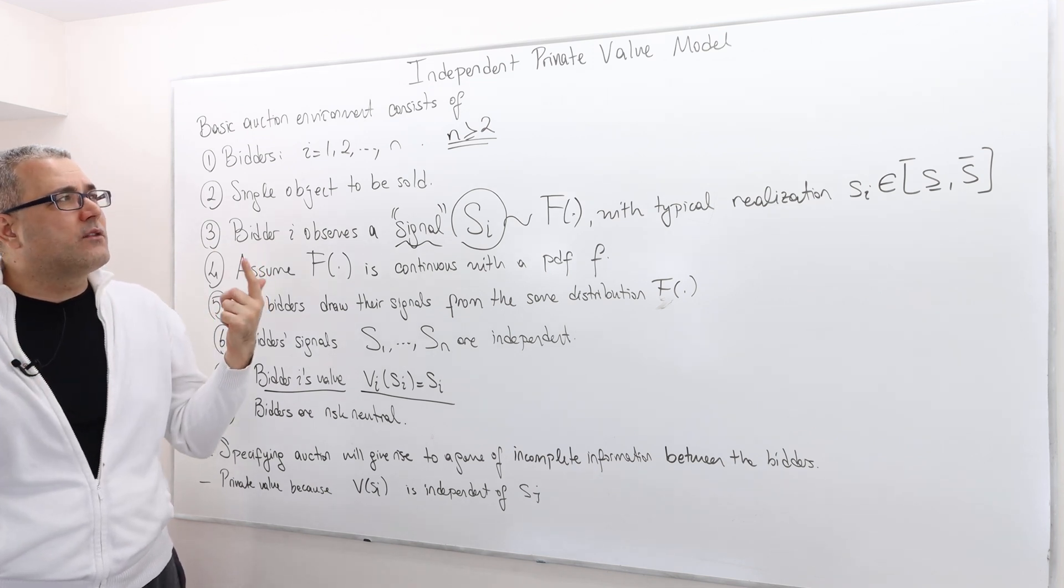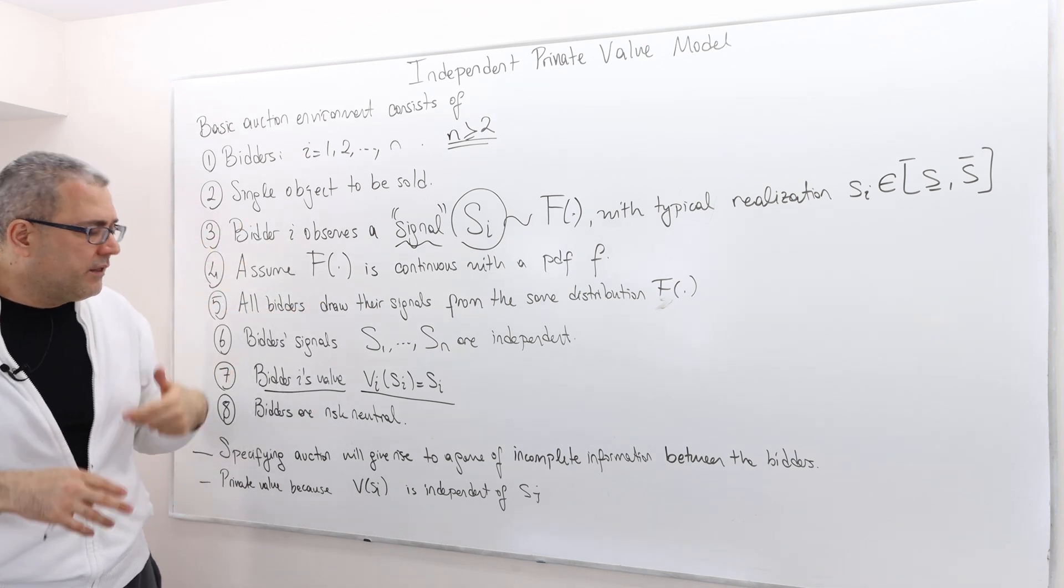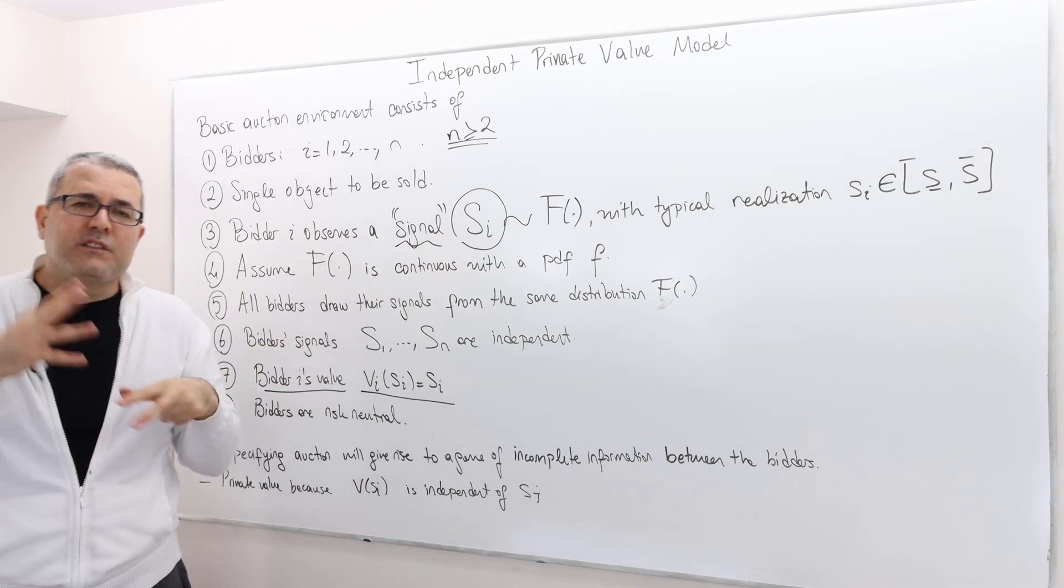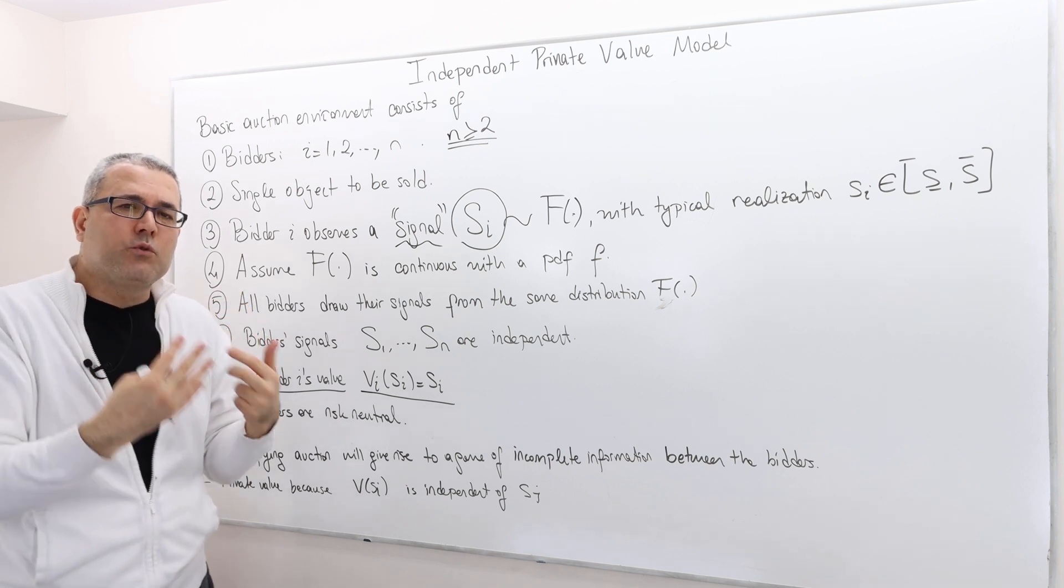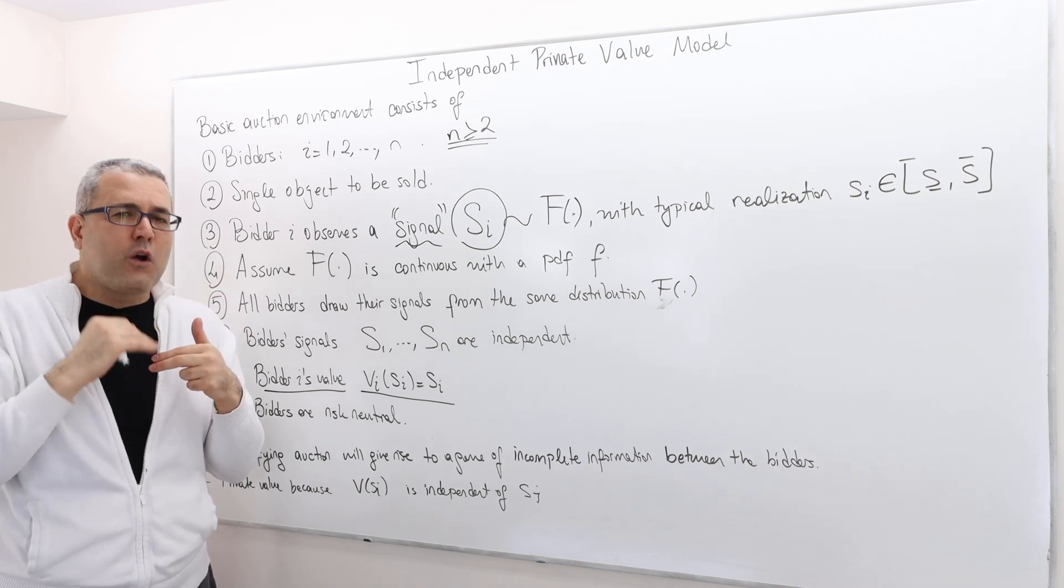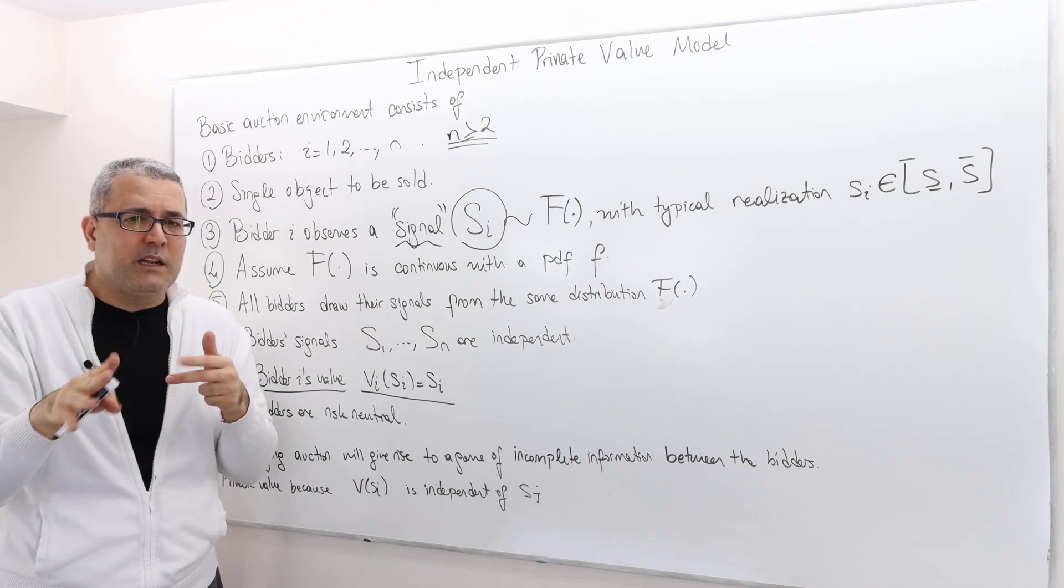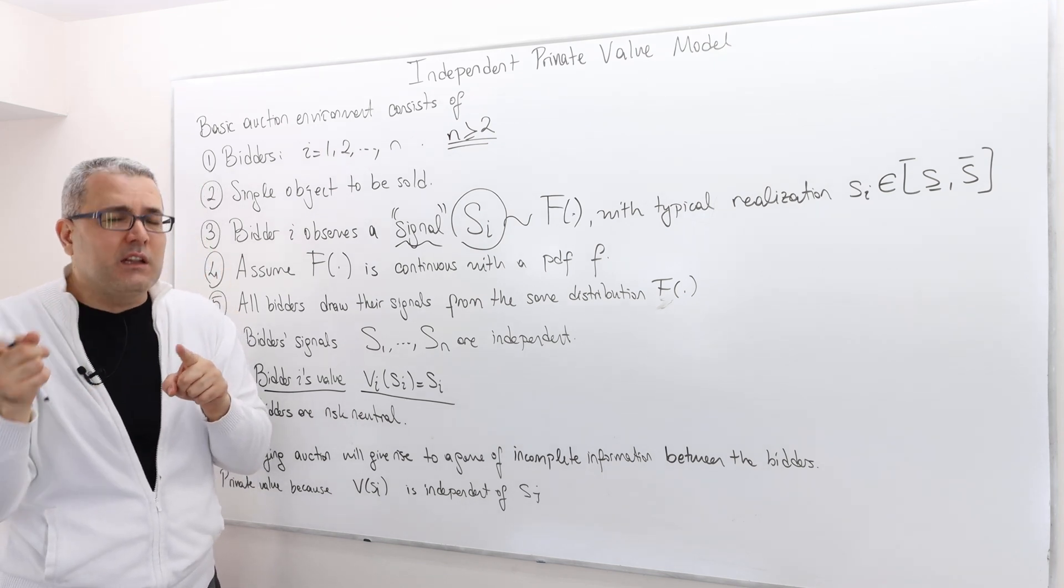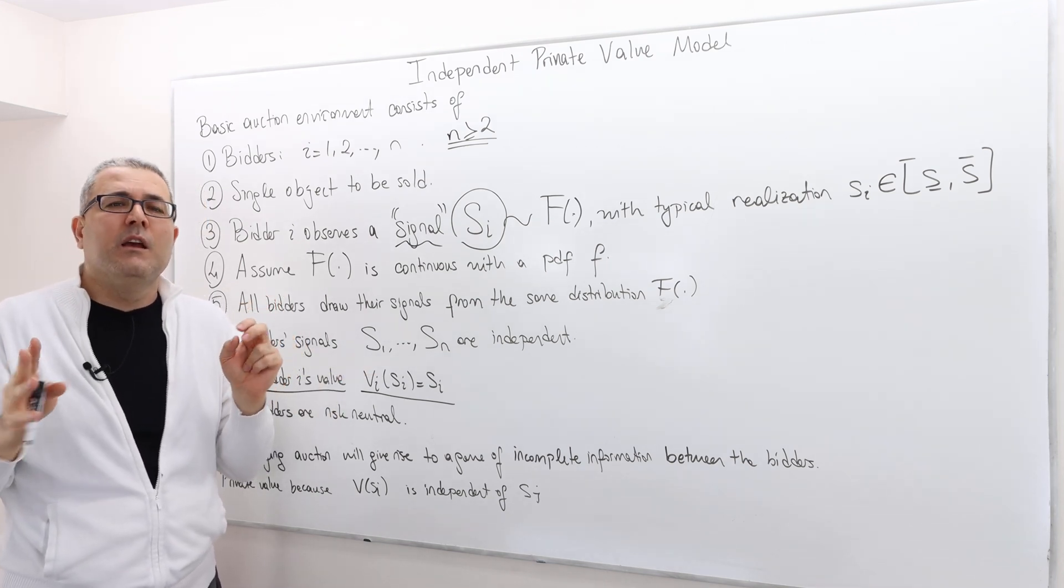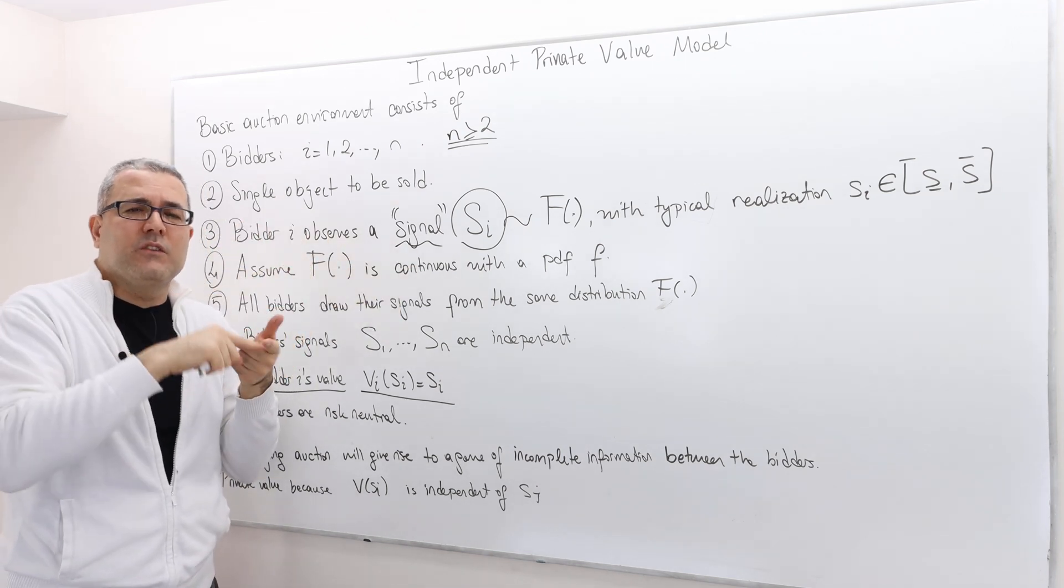You may wonder, what about non-private value model? We have, for example, correlated value model. There, the signals can be correlated, and so the valuations can be correlated. So I know this object is worth a million dollars to me, but you know what? You're not so different from me. And so probably your valuation is going to be around 1 million. I don't know exactly what it is—maybe it's slightly more than 1 million or less than 1 million. But I know that you're not going to value it 100 million because you're very similar to me.